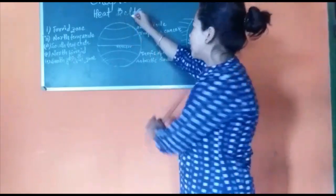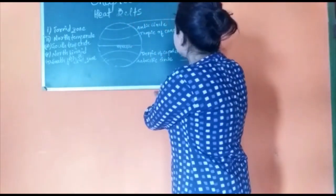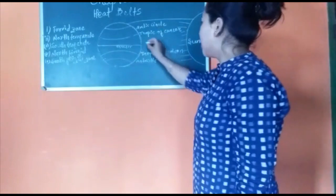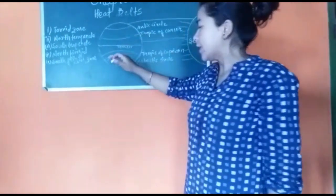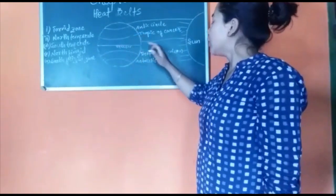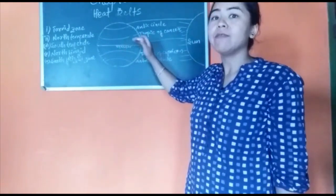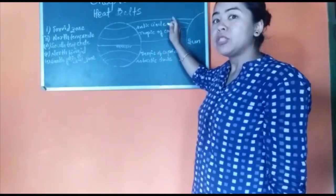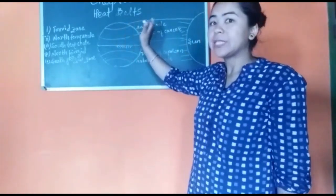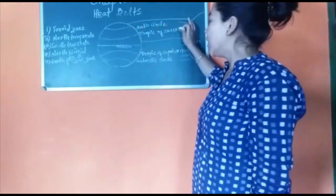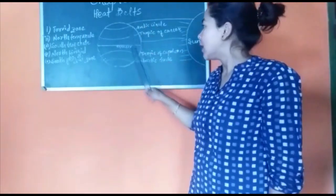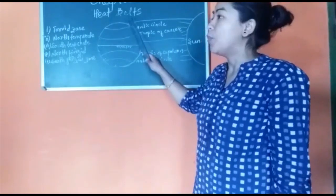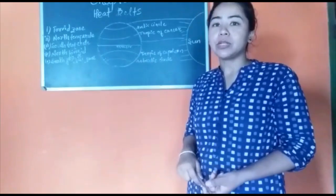The polar regions get slanting rays of the sun and these rays cover a greater distance compared to the rays striking at or near the equator. Near the equator the sun's rays are direct and vertical, covering a very short distance. At the poles the rays are oblique and slanting, also covering a larger area. That is why areas receiving direct rays of the sun are hotter compared to polar regions which receive oblique or slanting rays.